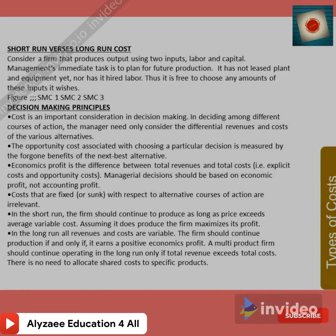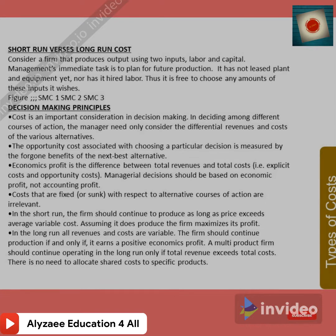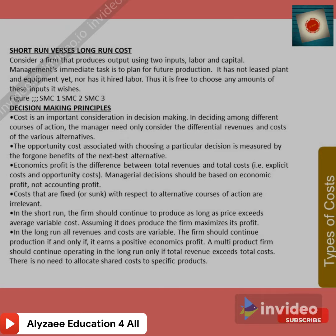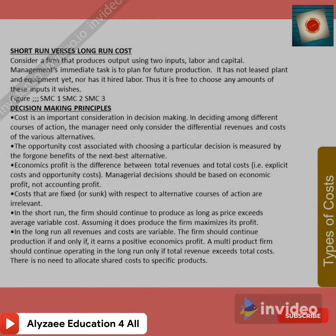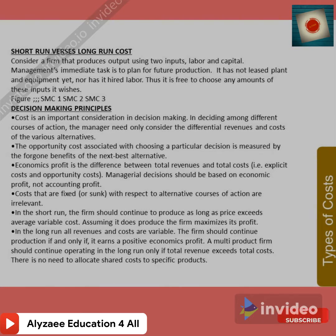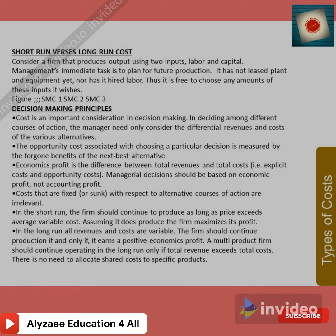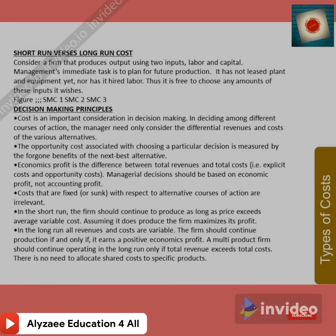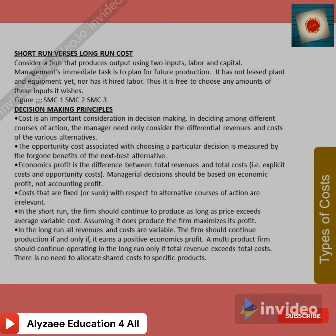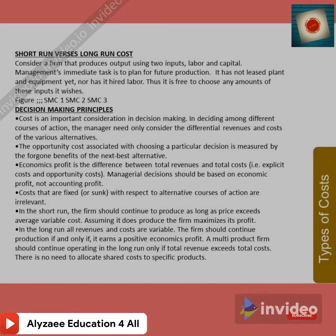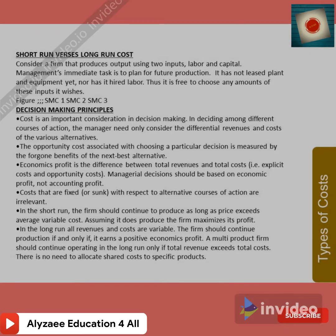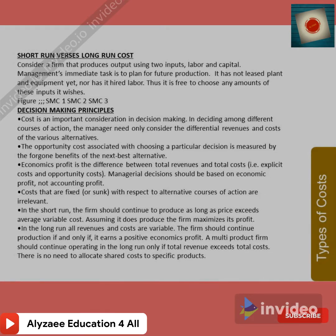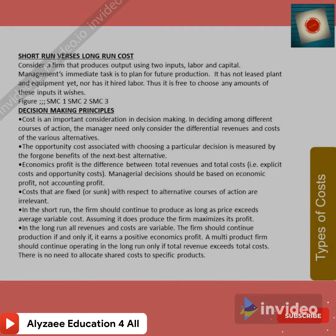Decision making principle: cost is an important consideration in decision making. When deciding among different courses of action, the manager need only consider the differential revenues and costs of the various alternatives. The opportunity cost associated with choosing a particular decision is measured by the foregone benefits of the next best alternative. Economic profit is the difference between total revenue and total cost, including both explicit cost and opportunity cost. Managerial decisions should be based on economic profit, not accounting profit. Fixed or sunk costs are irrelevant to decisions about alternate courses of action.